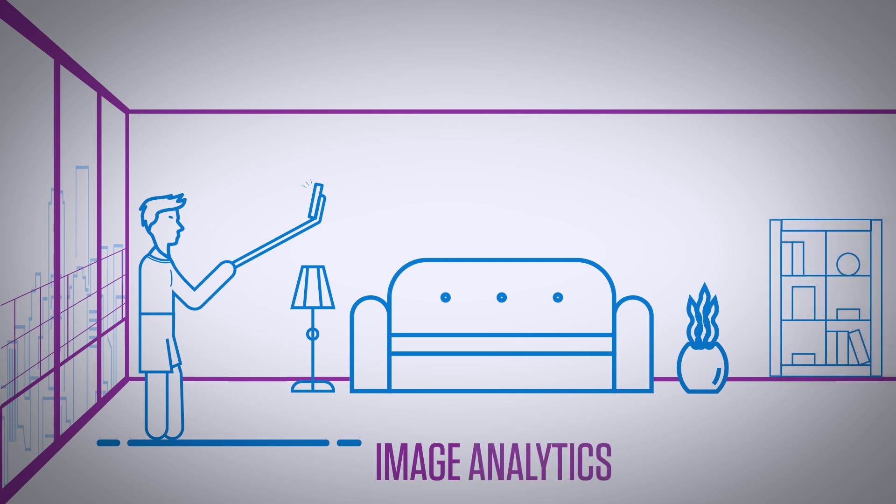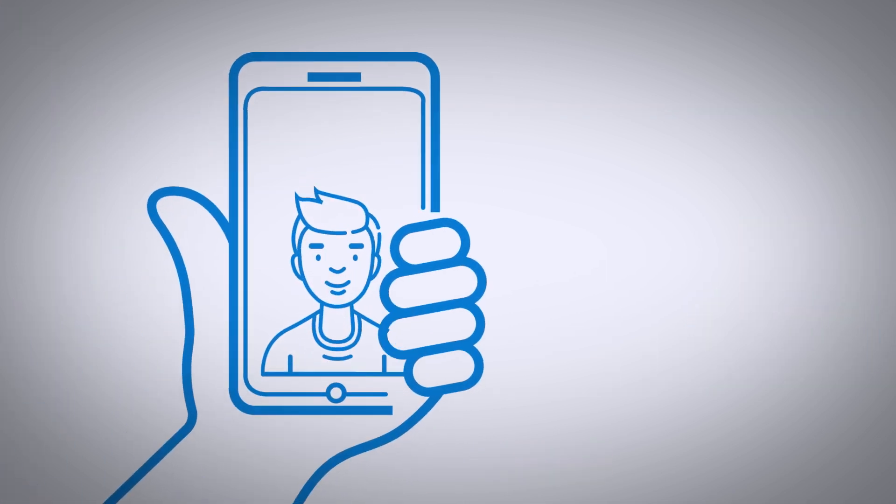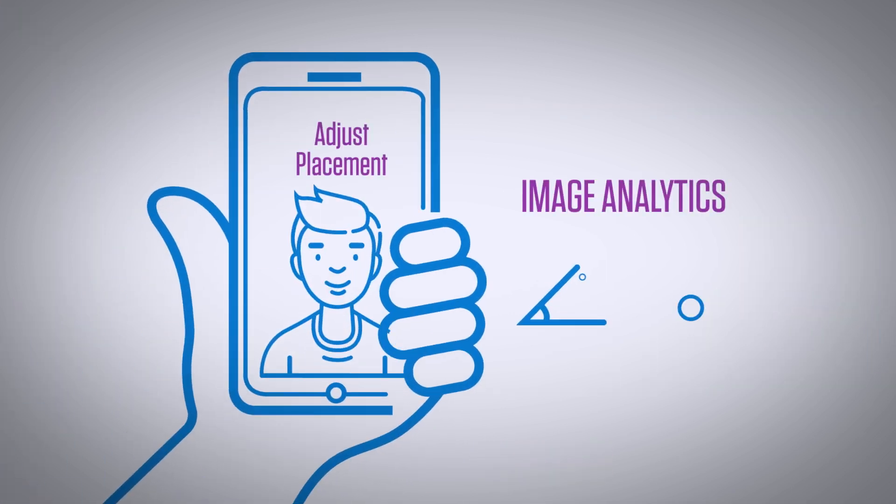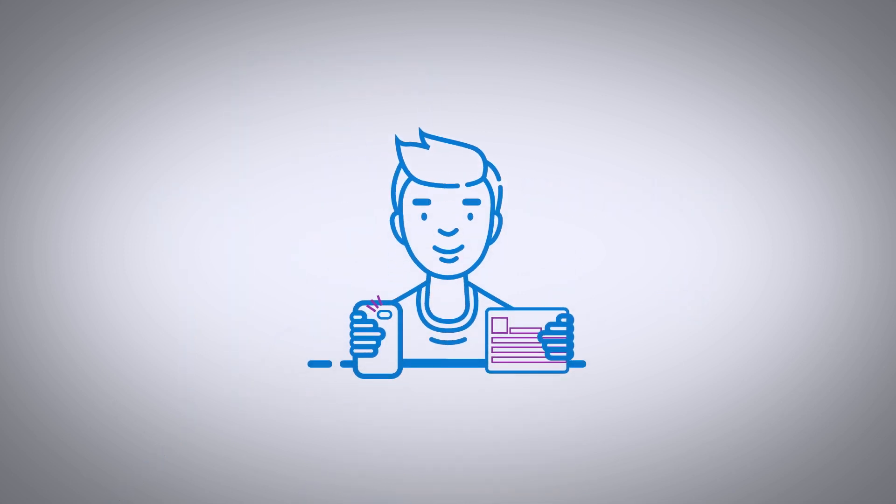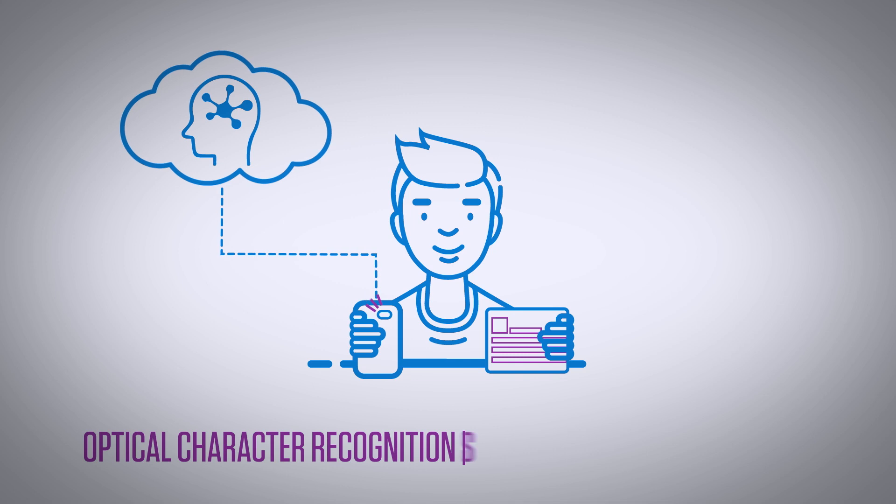Steve takes a selfie for his application and is advised angle adjustments based on lighting and face position. Next he holds his driving license in front of the camera. The system captures and verifies his details and signature.